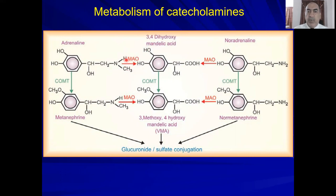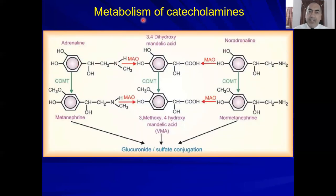Let's look at the catecholamine structures. Adrenaline is also called epinephrine, and noradrenaline is also called norepinephrine. They are called catecholamines because the nucleus — a benzene ring with two hydroxyl groups in the ortho position — is called the catechol ring. Metabolism can occur via MAO first then COMT, or COMT first then MAO — the end result is the same.